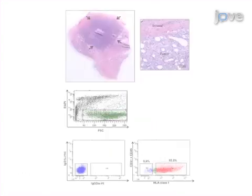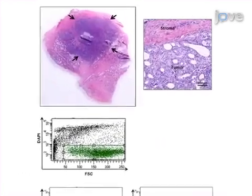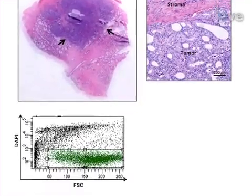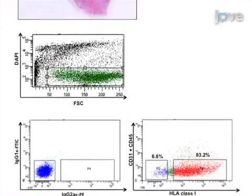Ultimately, the molecular and functional attributes of the isolated cells can be characterized by xenotransplantation and gene expression profiling. This method can help answer key questions in the prostate cancer field by facilitating the molecular and functional characterization of cancer stem cells from human samples.